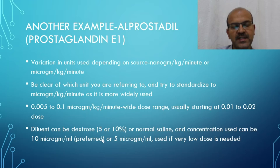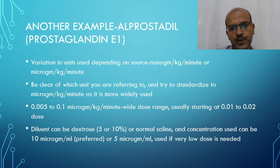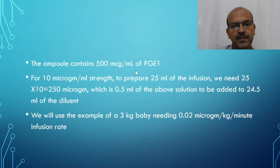The concentration used is usually 10 microgram per ml, which is preferred. We can also use 5 microgram per ml if the dose is very low, as it's easier to use on the pump. The ampoule contains 500 microgram per ml of Prostaglandin E1.